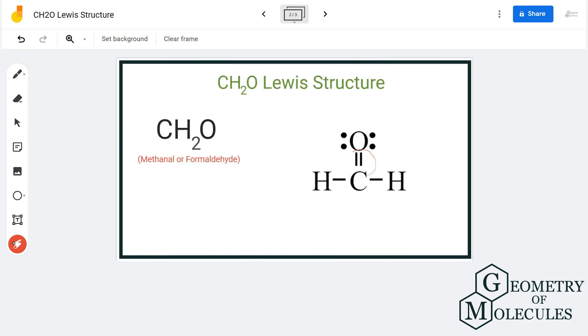You see here there is a double bond between C and O but there is a single bond between C and H. So this is the Lewis structure for CH2O in which carbon atom has single bonds with both hydrogen atoms and a double bond with an oxygen atom.